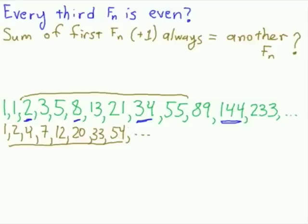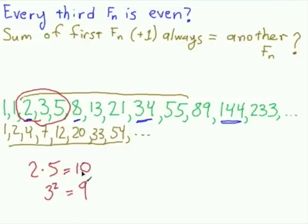Okay, the last pattern I want to look at is a little more complicated. What I'm going to do is I'm going to take three numbers in a row from the Fibonacci sequence, and I'm going to look at the outside numbers multiplied together. That's 2 times 5 gives me 10. And then I'm going to look at the square of the middle term. 3 squared is equal to 9. Okay, these guys are pretty close. They're one-off.